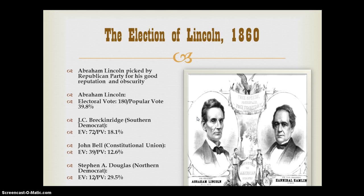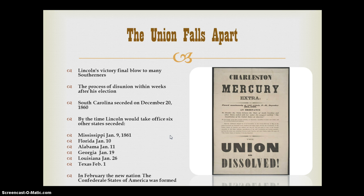The important thing to realize is that even in his relative obscurity, Abraham Lincoln was seen by slave owners as anti-slavery — that was the problem they had with him and the Republican Party. The election of Lincoln in 1860 was seen as a foreboding event as far as Southerners were concerned. His victory was seen as a final blow to many of them, and the Union began to fall apart. Literally within weeks of his election there was disunion, and South Carolina seceded on December 20, 1860 — they weren't even waiting for Christmas.